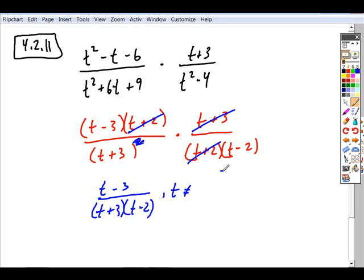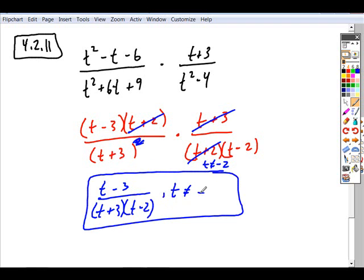We need to identify any domain restrictions that got canceled that are not apparent in the simplified form. So again, even though a t plus 3 got canceled, they didn't all get canceled, so we don't need to account for that. We see here that the t cannot equal a negative 2. That's not apparent in the simplified form, so you need to include that as a separate restriction.